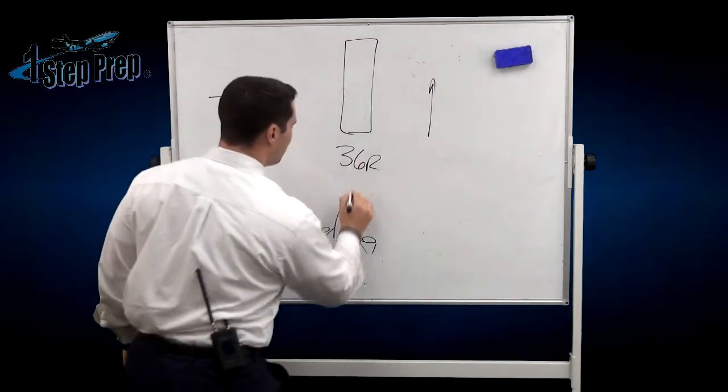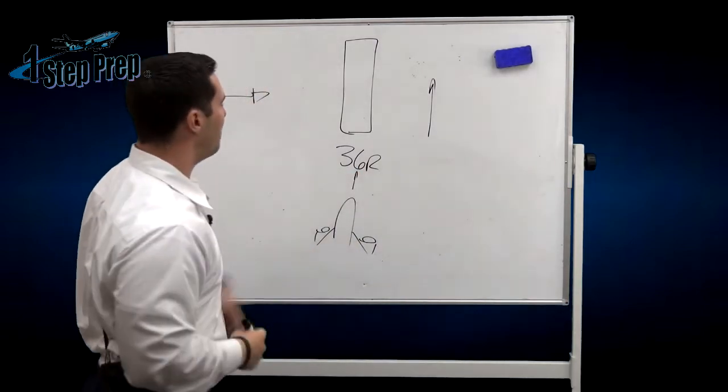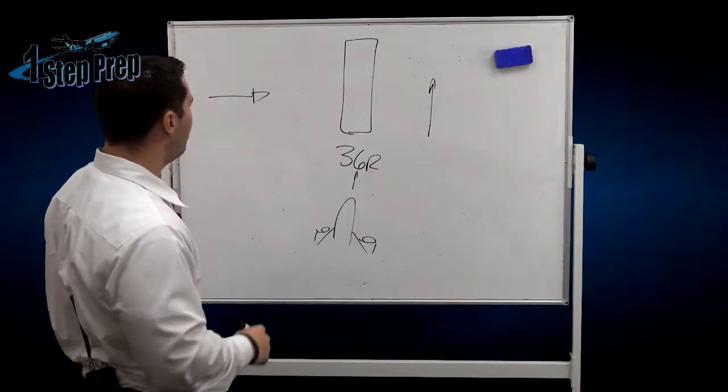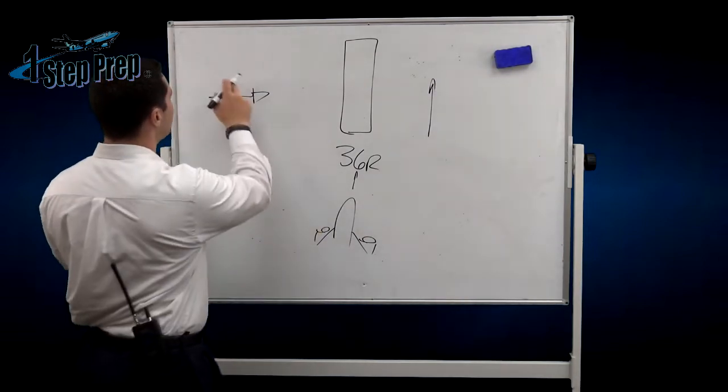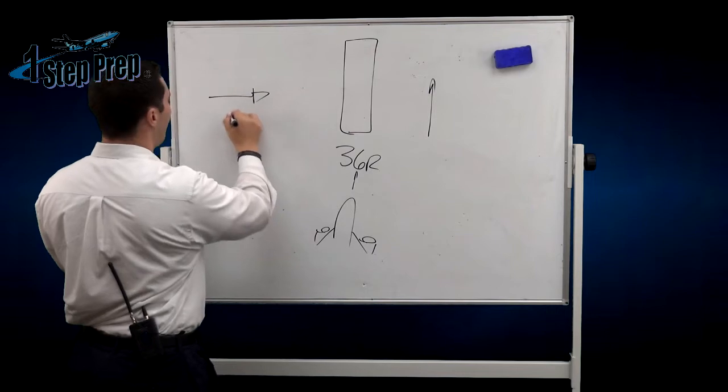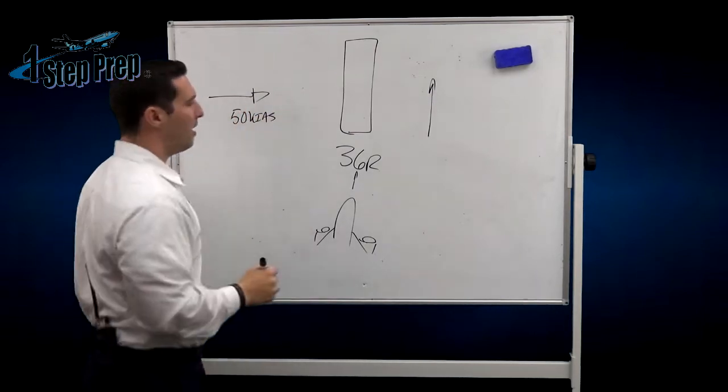So check this out. Let's say we're on this approach, we're going in on 36. And we have a left crosswind blowing at 50 knots, okay, 50 knots.